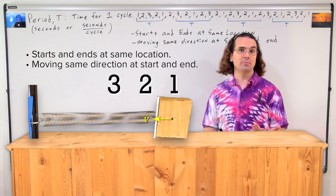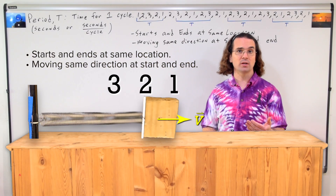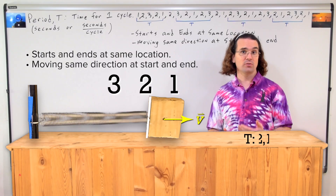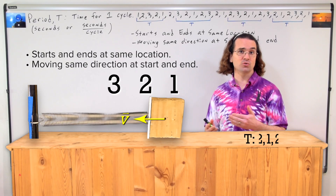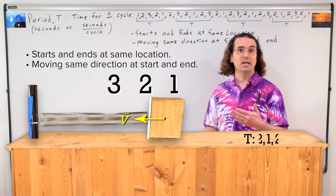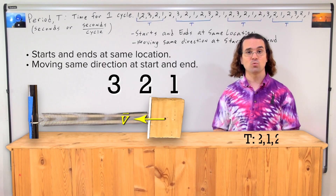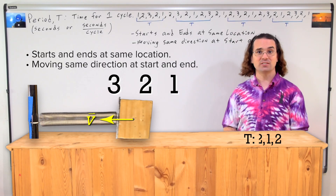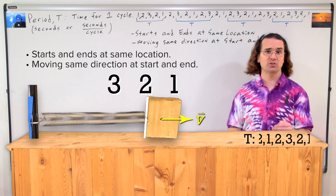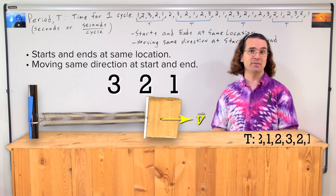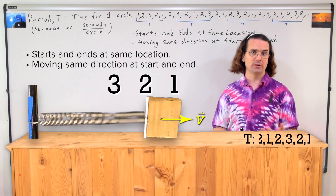We can do the same thing with the object starting halfway between positions 2 and 1 and moving to the right. The first time it gets back to halfway between positions 1 and 2, it is moving to the left, which means it has not gone through one full cycle. It has to continue all the way back to halfway between positions 1 and 2 and be moving to the right before it has gone through one full cycle.